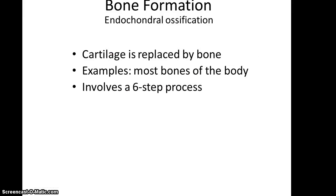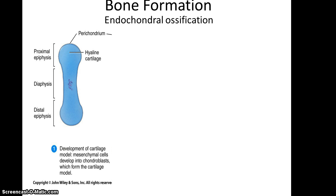That is how you get the flat bones of the skull. The second approach to bone formation is endochondral ossification, where hyaline cartilage is replaced by bone tissue, and this occurs in most of the bones of the body. It is a six-step process. The hyaline cartilage is in the right place and shape for the bone it will eventually become, and it is surrounded by perichondrium, which provides access to nutrients from blood vessels.